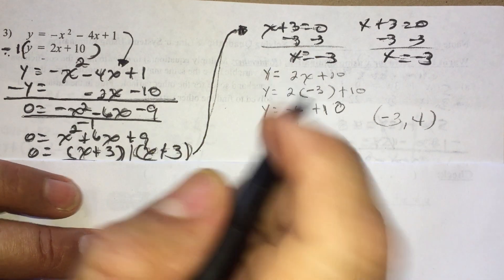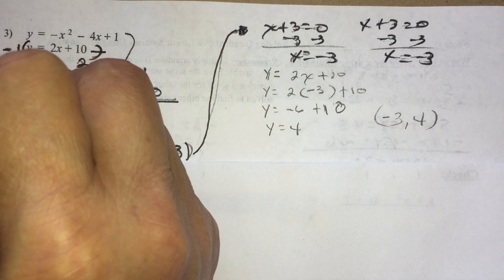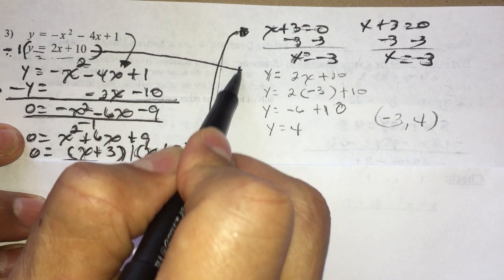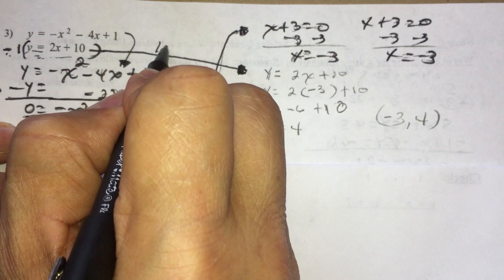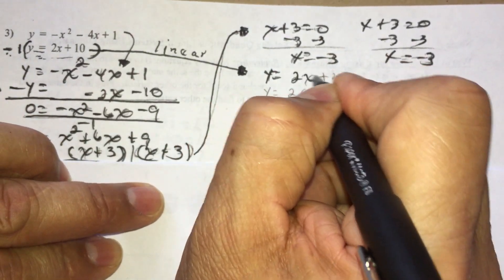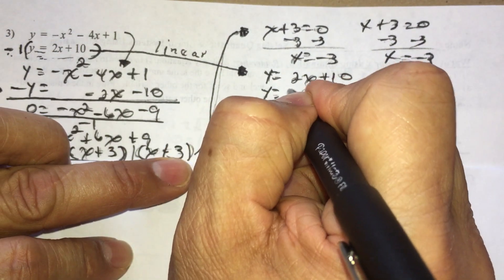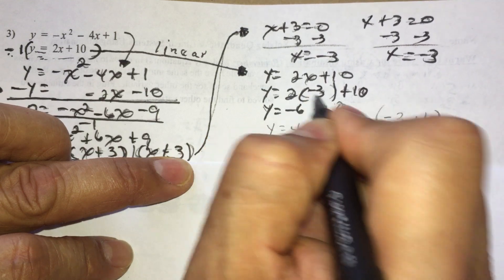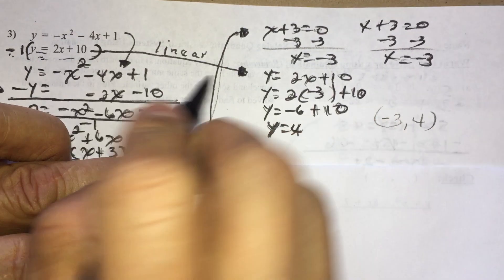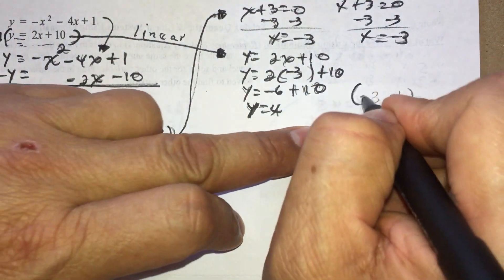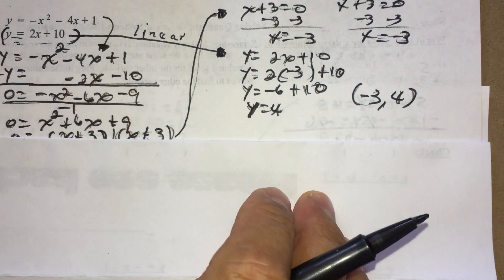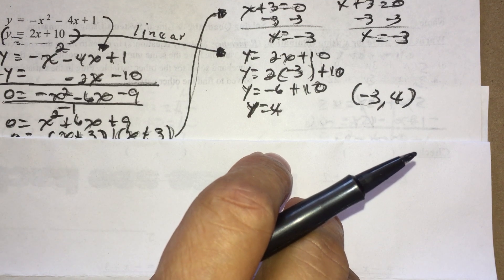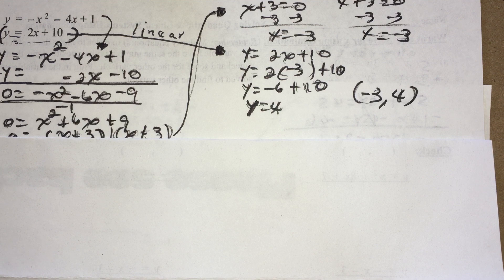Since it's a double root, I only need to find y once. Using the linear equation y = 2x + 10 with x = −3: y = 2(−3) + 10 = −6 + 10 = 4. My only solution is (−3, 4). The parabola and line cross each other at just that one point.